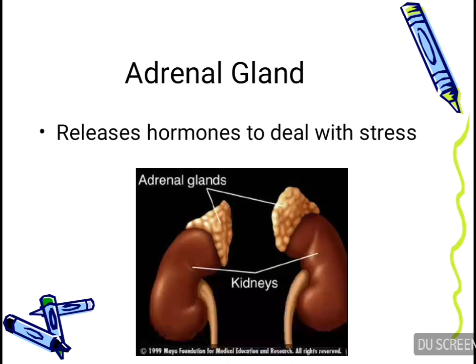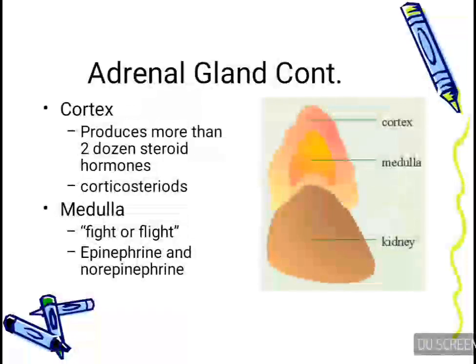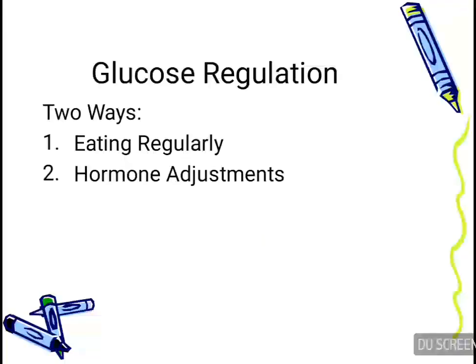The next type of glands are the adrenal glands. As you can see in the diagram, these glands are present as a capping above the kidneys and they release hormones to deal with stress conditions. The adrenal gland has two major parts: cortex and medulla. The cortex produces more than two dozen steroid hormones and corticosteroids, whereas the medulla helps handle fight-or-flight conditions and secretes two hormones: epinephrine and norepinephrine.